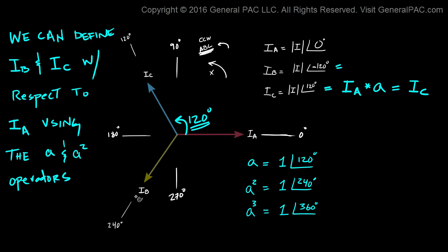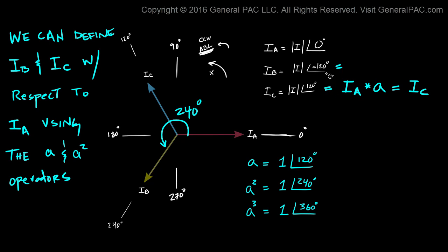Now for IB, the same idea applies but it's slightly trickier. IB and IA have the same magnitude — the only difference is the phase displacement. If we take IA and rotate it 240 degrees counterclockwise, we can overlap IB completely. So IB equals IA multiplied by A superscript 2. We take IA and shift it by 240 degrees, and when we do that, we get IB.